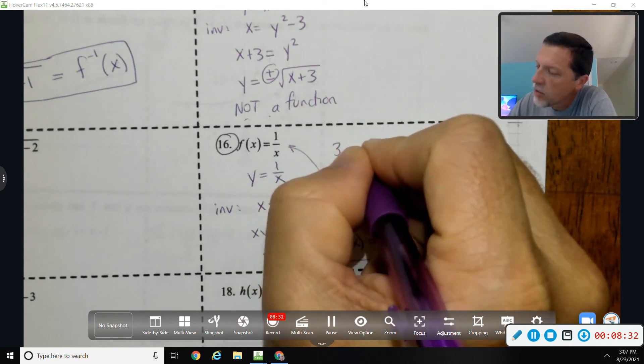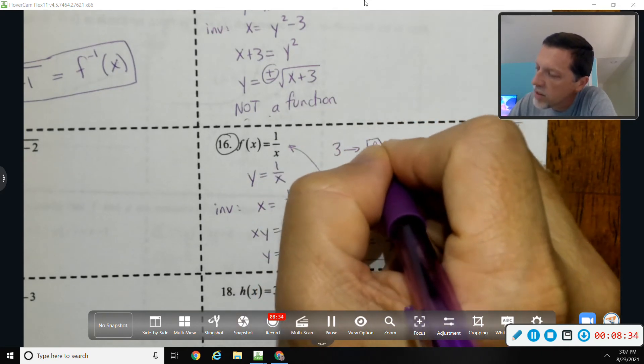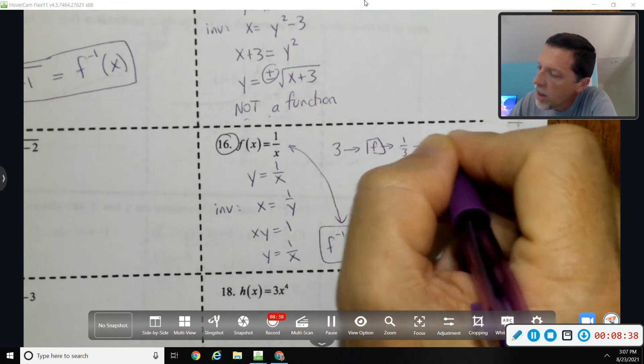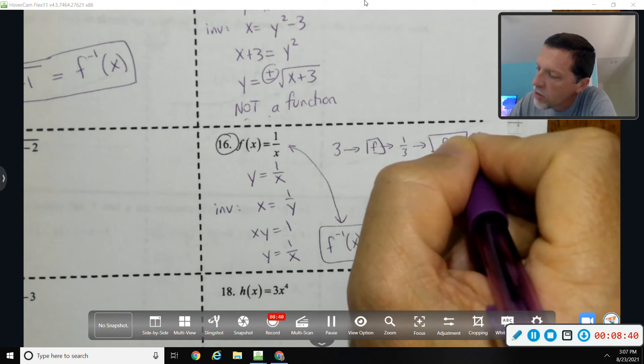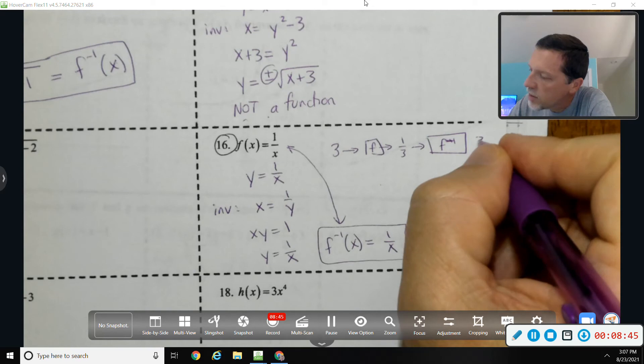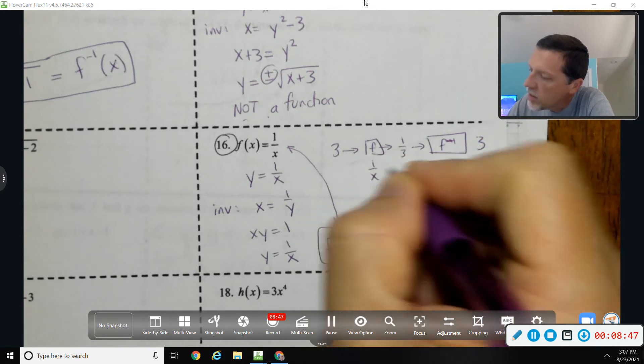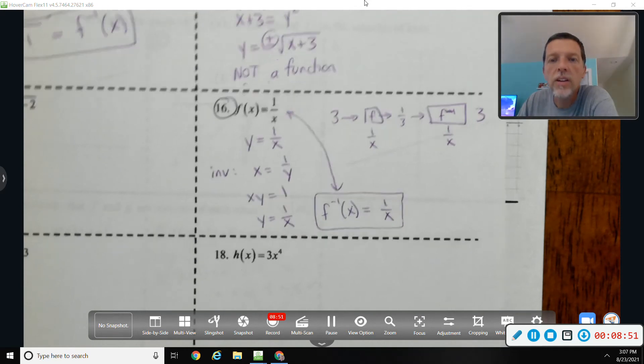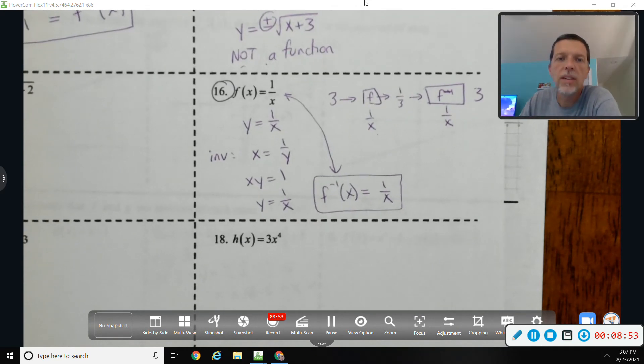If you remember that an inverse undoes what the original function does, so if the first function flips it over—if we stick three into the function box, we would get out one third. And then if we put that into the inverse box, we flip it over again and we're back to three. So one over x and one over x, even though they're the same function, they're inverses of one another. That's kind of a weird situation.